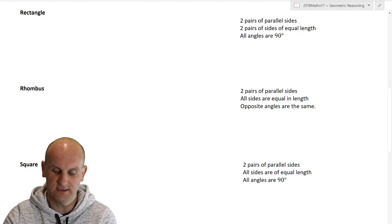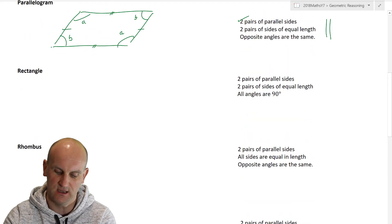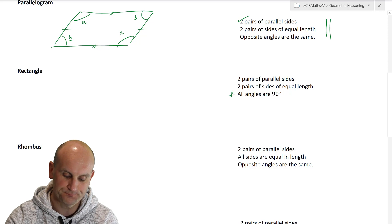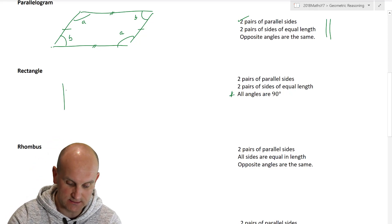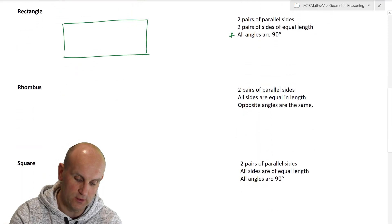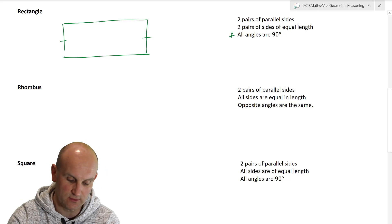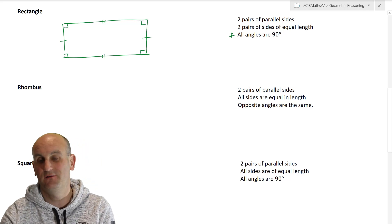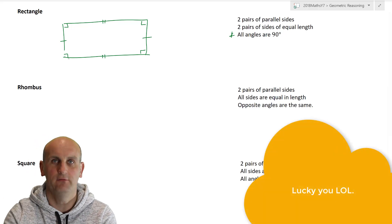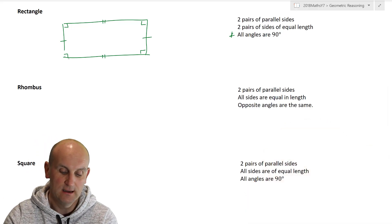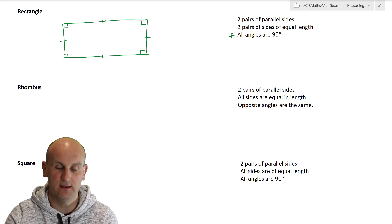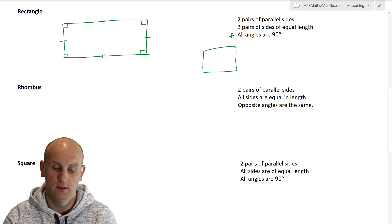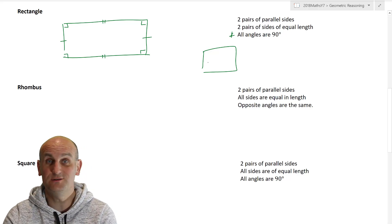Now rectangles we've been dealing with forever. Two pairs of parallel sides — that seems exactly the same as the last one. And two pairs of sides of equal length — again, exactly the same. But the critical difference for a rectangle is that all the angles have to be 90 degrees. So by putting these little corner signs in — and you have to put them in — only now can I state with absolute accuracy that that diagram is a rectangle. You'd be surprised how many people just draw a shape and say it's a rectangle. Without those right angle marks, it's a quadrilateral.